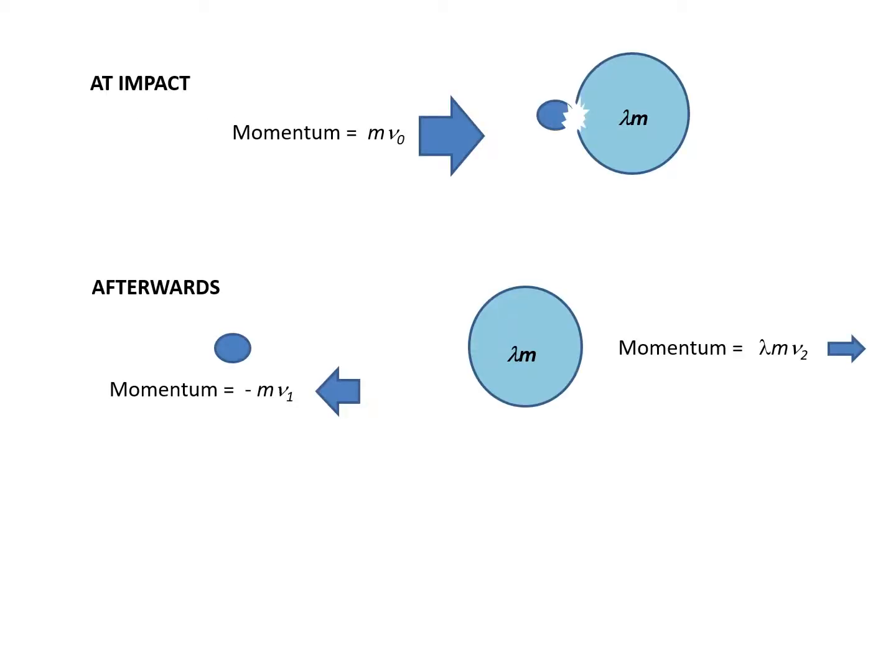At the instant of impact, the momentum delivered by impactor is m v0. Right afterwards, the momentum of the rebounding impactor is minus m v1, whereas that of the target is lambda m v2. So you make use of this information to write down the equations of equal momentum, as shown at the bottom of the slide.